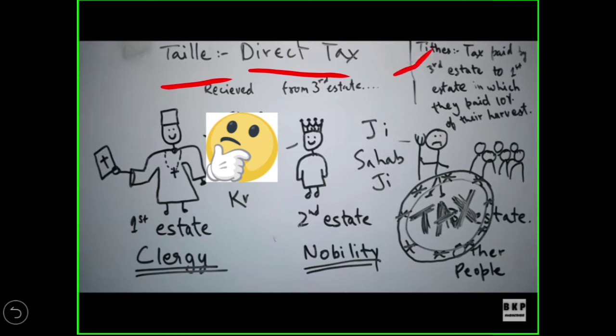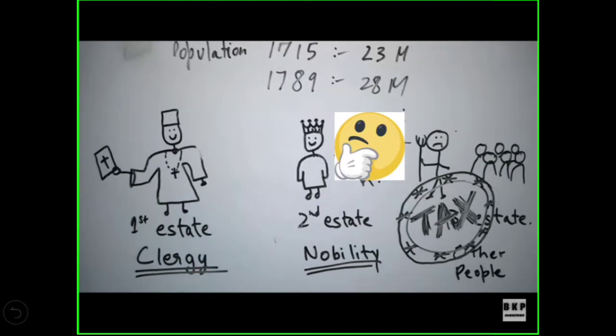For more clear understanding, you have to refer to your NCERT book, chapter 1. What was the condition of France in the year 1715? There was a population of 23 million. But by the time 1789 came, the population had increased to 28 million. As the population was increasing, the production was lessening. Why? Because the poor farmers had to pay 10% on every harvest.